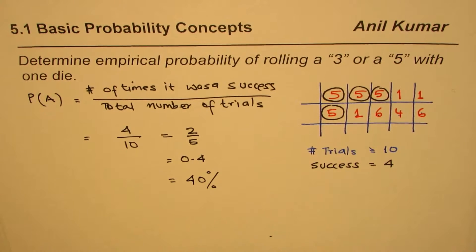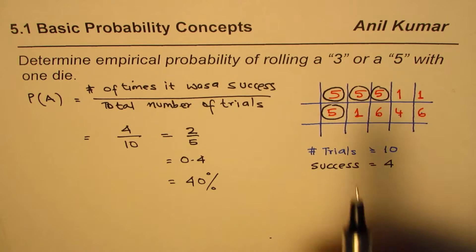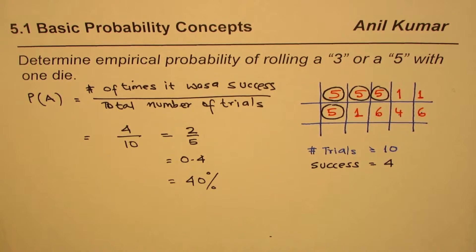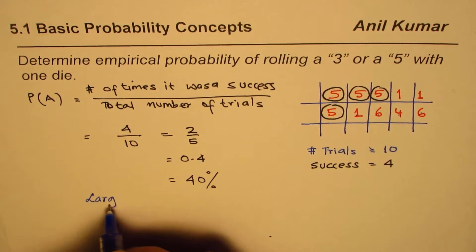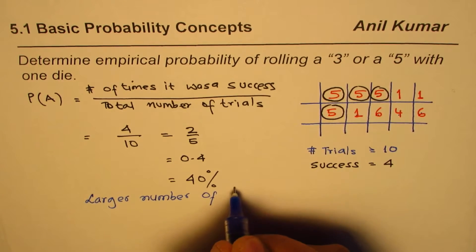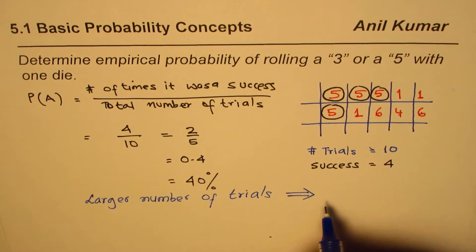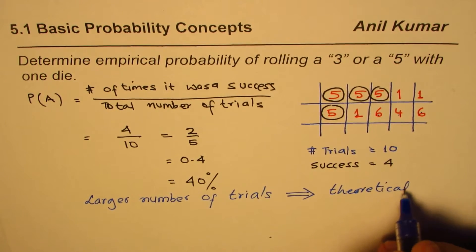So we got a probability of rolling a 3 or a 5 as 40%. Note that the empirical probability — also called experimental or relative frequency probability — is very different from the theoretical probability. In theory, there are 2 numbers out of 6, giving 2/6. However, if you continue this experiment with a larger number of trials, the empirical probability will approach the theoretical probability.